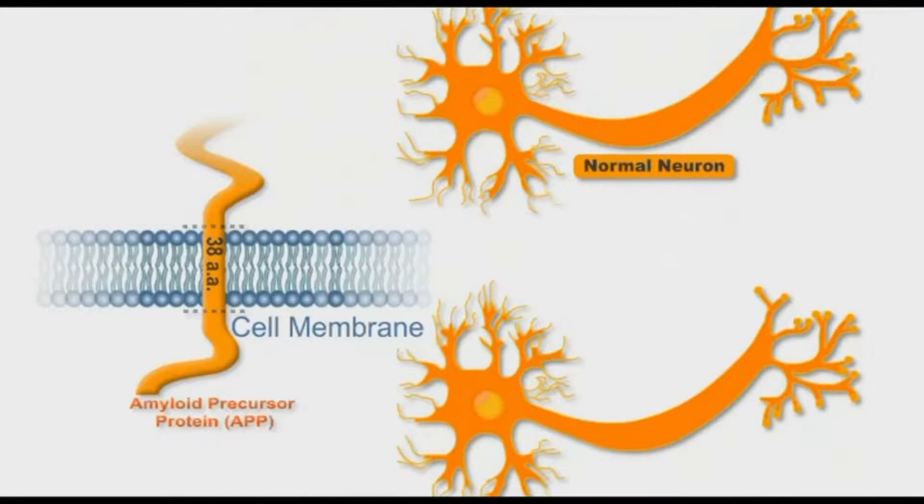Naturally, this protein undergoes regular turnovers by two enzymes: the beta secretase enzyme which cuts the APP from the external side, and the gamma secretase enzyme which cuts it from the cytoplasmic side. This degradation process produces short fragments of a 38 amino acid long peptide. The resulting 38 peptides are easily metabolized and eliminated from the body without any harmful effect.